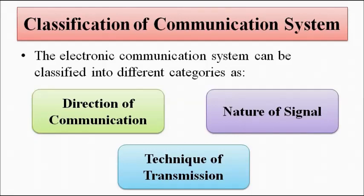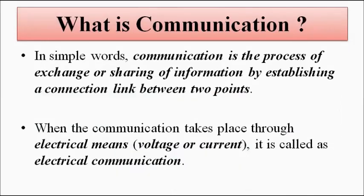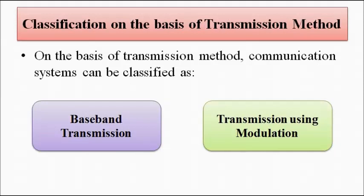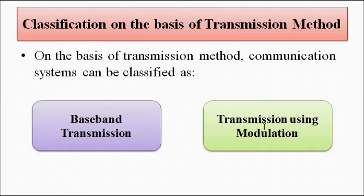We all know that communication basically involves sharing of information from one point to another, from source to the destination. This whole process can be achieved in two ways, and that is the classification on the basis of transmission method. The first one is called baseband transmission and the second is transmission with the help of modulation.